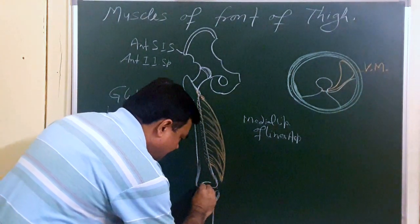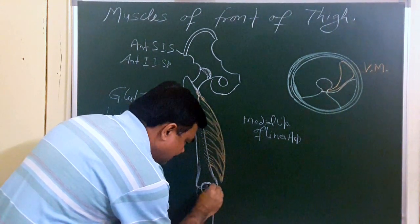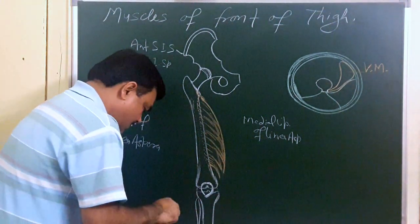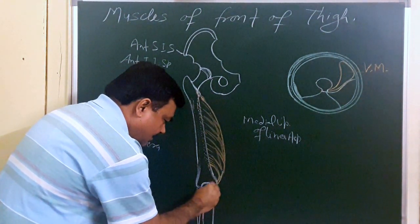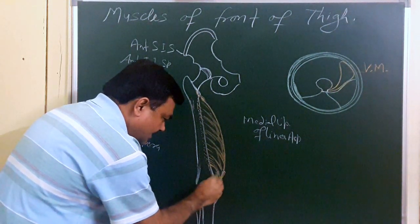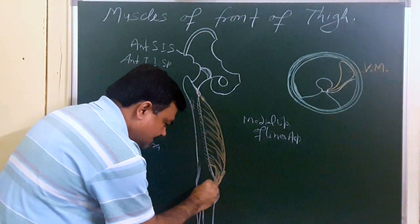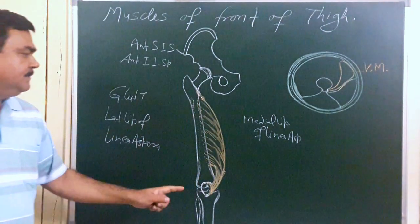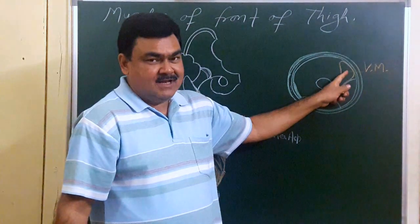The vastus medialis muscle is inserted on the medial border of the patella and also on the base of the patella. Here is the position of the patella. This is the vastus medialis muscle.